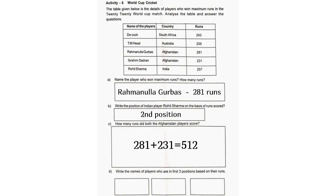D. Write the names of players who are in the first three positions based on their runs. Rahmanullah Gurbaz, Rohit Sharma, Travis Head.